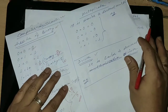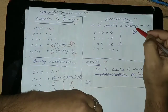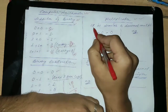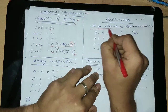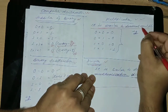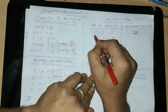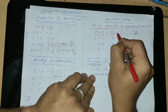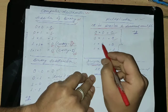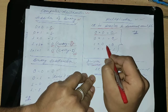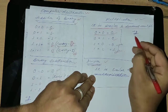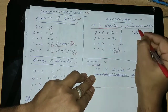Next, multiplication in binary — that means binary number system. It's very similar. The multiplication system and the division system are all similar to the decimal number system. Whenever you multiply 0 with 0, the answer becomes 0. Whenever you multiply 0 by 1, the answer becomes 0. And 1 multiplied with 0 is 0 and 1 multiplied with 1 is equal to 1.